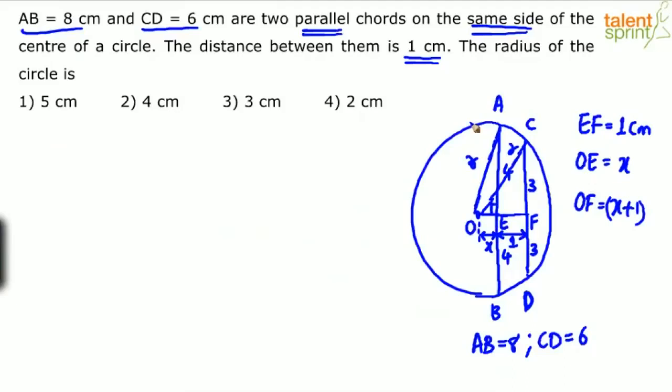Apply Pythagorean theorem. In triangle O E A, X squared plus 4 squared equals R squared. In triangle O F C, X plus 1 whole squared plus 3 squared equals R squared.